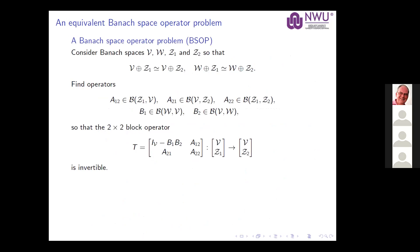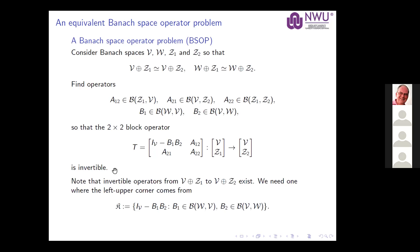This reduces to a Banach space operator problem: given Banach spaces V, W, G_1, V_2 such that extending V or W with one of two spaces makes them isomorphic, we want to find operators A_{12}, A_{21}, A_{22}, B_1, and B_2 so that the two-by-two block operator matrix they form becomes invertible. If you can characterize when this is possible, you solve the previous problem. Conversely, if a problem of this type fails, you can construct an essential counterexample.